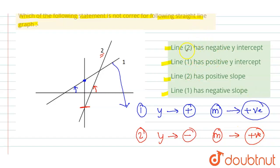Now coming to options: Line 2 has negative y-intercept - this is correct. Line 1 has positive y-intercept - this is also correct. Line 2 has positive slope - this is also correct.